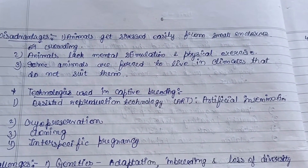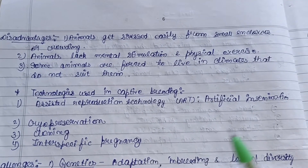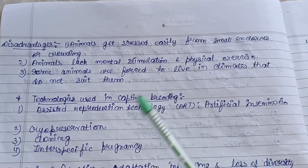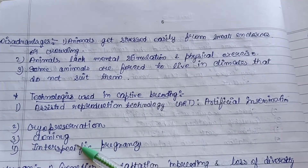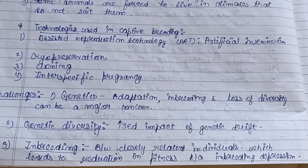Some assisted reproductive technologies are used in captive breeding programs: the first is ART (assisted reproductive technology), then cryopreservation, and then cloning.